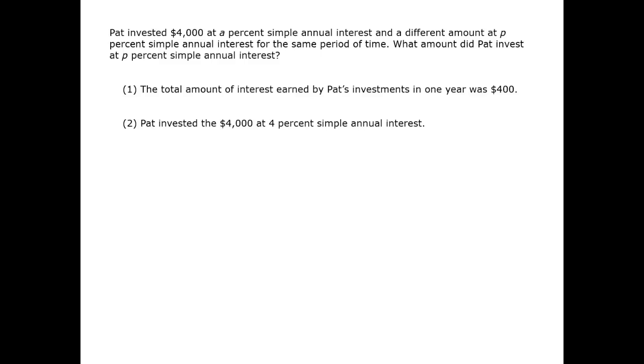Turning to the data statements and evaluating separately first, we can look at statement 1. Statement 1 indicates that the total amount of interest was $400. That means we can write the following expression. A bunch of variables are still missing. Even if the two interest rates were the same, we still wouldn't have enough information. Therefore, statement 1 is insufficient.